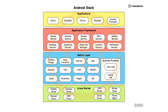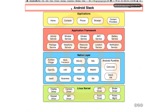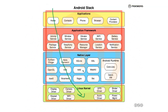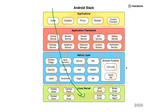By show of hands, how many of you have never seen a picture that looks like this? Okay, cool — so you came to the right place. We're not going to be talking about the stack itself; we're going to be talking about the intersections through it. Think of it as going from the top of the stack down through the application framework, through the native layer to the Linux kernel, discussing services along the way.